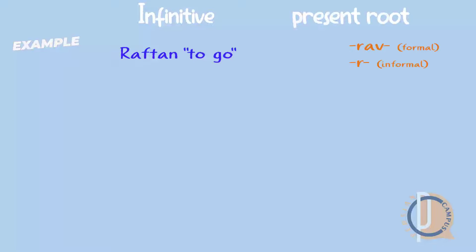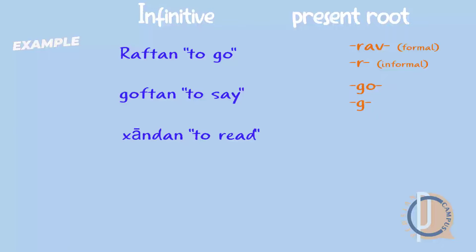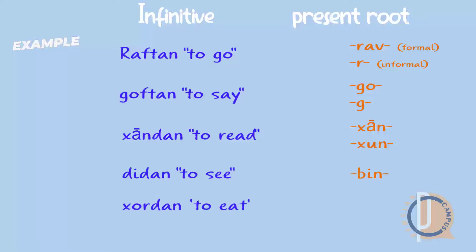Let's look at some main verbs and change them to present continuous. 'Raf-tan' means 'to go'; present root is 'rav' (formal) / 're' (informal). 'Guf-tan' means 'to say'; present root is 'guh' (formal) / 'guh' (informal). 'Khandan' means 'to read'; present root is 'khan' (formal) / 'khun' (informal). 'Didan' means 'to see'; present root is 'bin.' 'Khordan' means 'to eat'; present root is 'khor.' 'Part-kardan' means 'to throw'; present root is 'part-kon.'